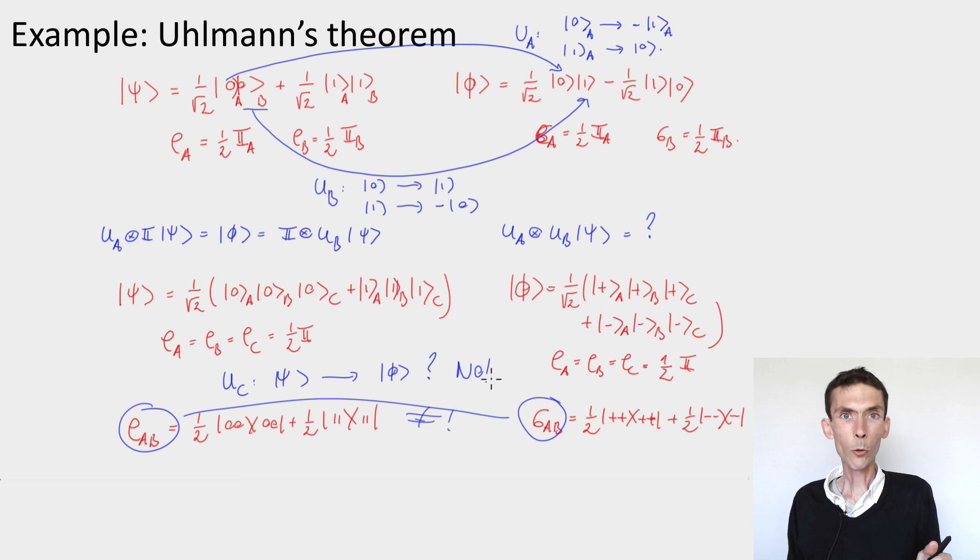So it's very important that we talk about pure states here and not mixed states. I could have made a mistake by saying, look, let's look at the mixed state psi, which is just the reduced density on A and C. And in that case, if I further look at the reduced density on A, they're the same in both cases. They're the totally mixed state. That doesn't mean that I can map the one to the other by acting only on C. So Uhlmann's theorem only applies to pure states and not mixed states.